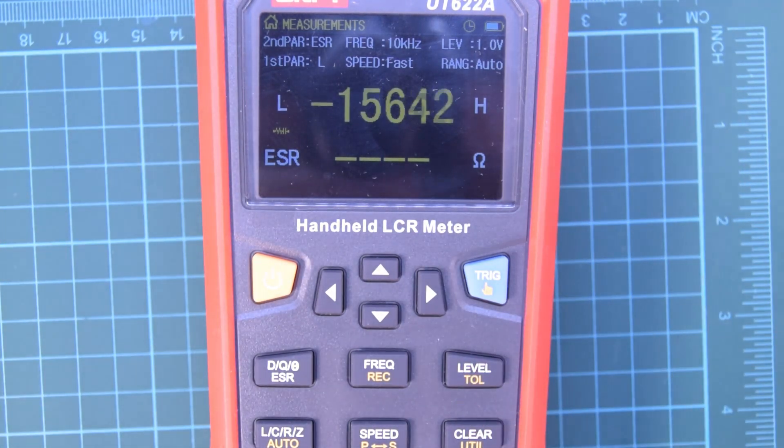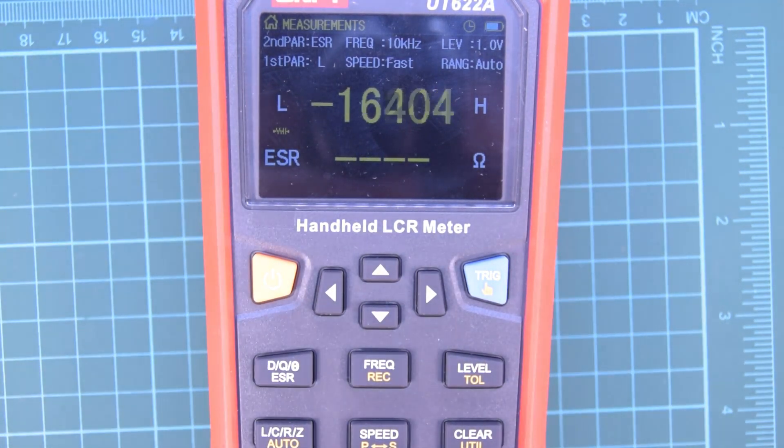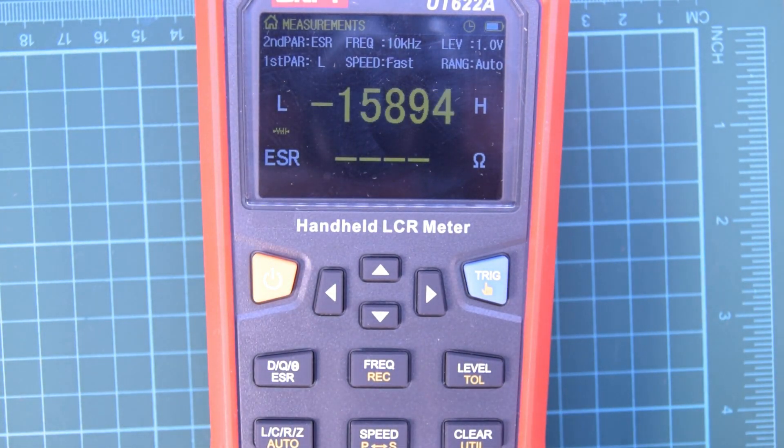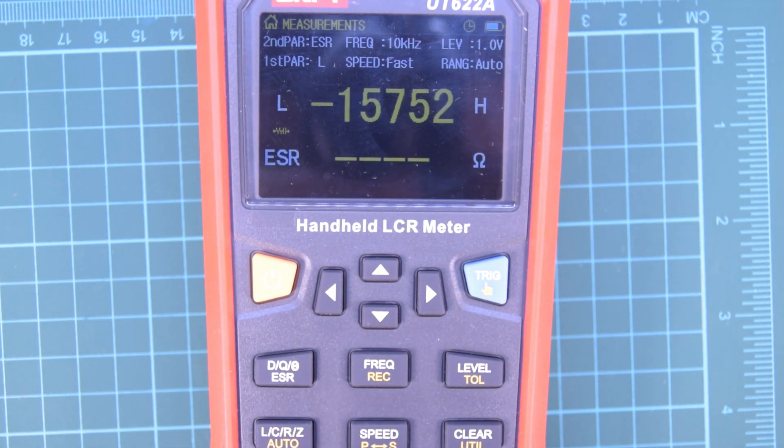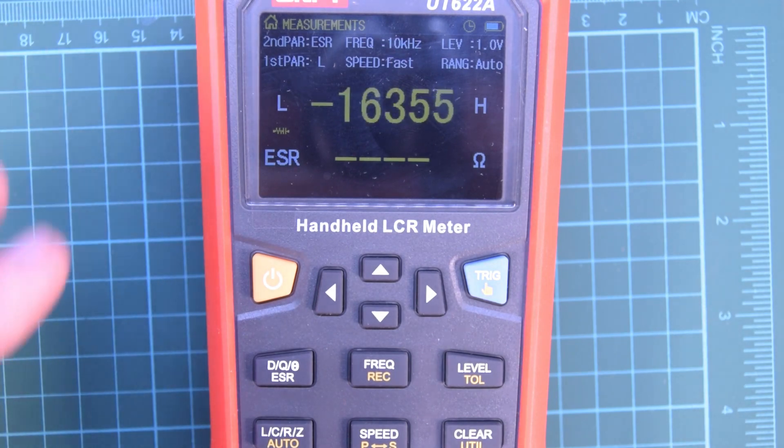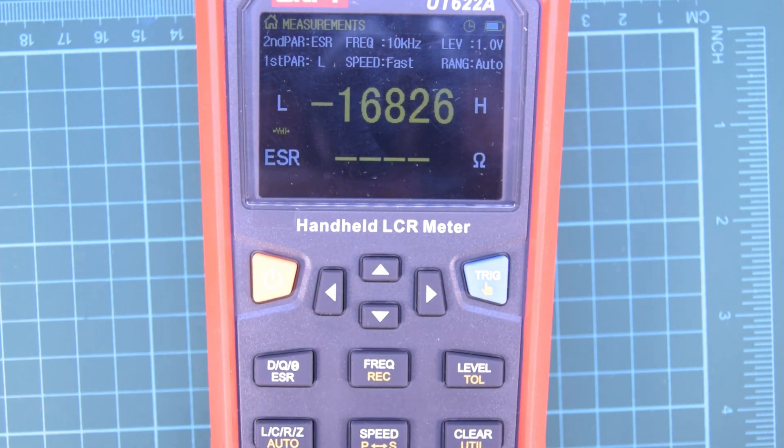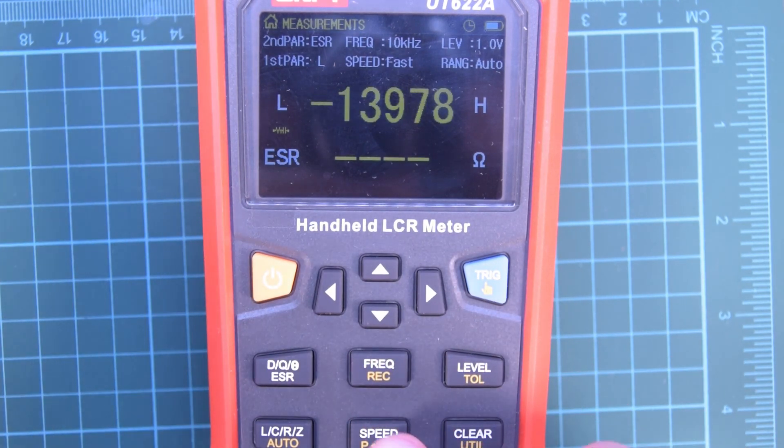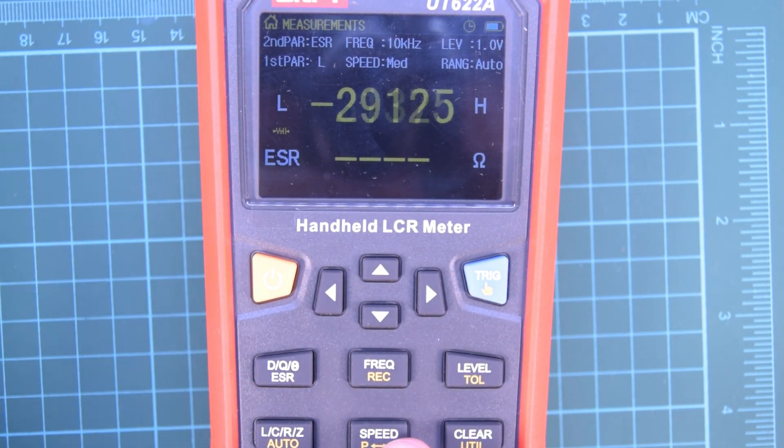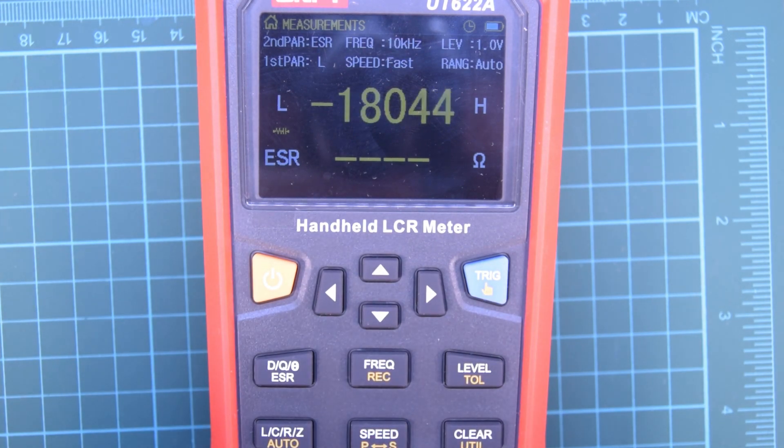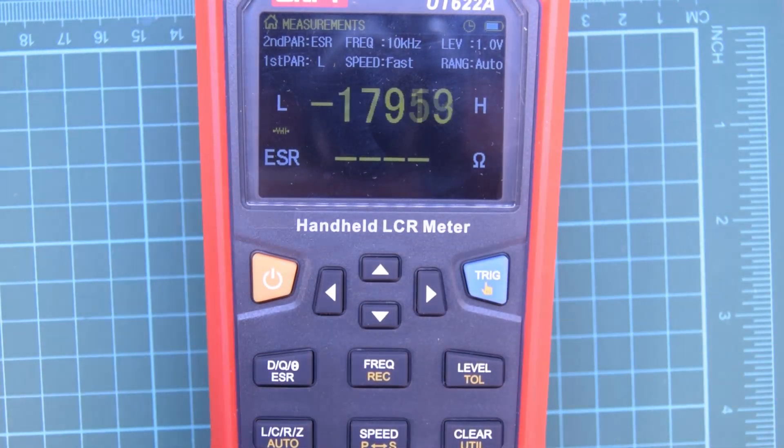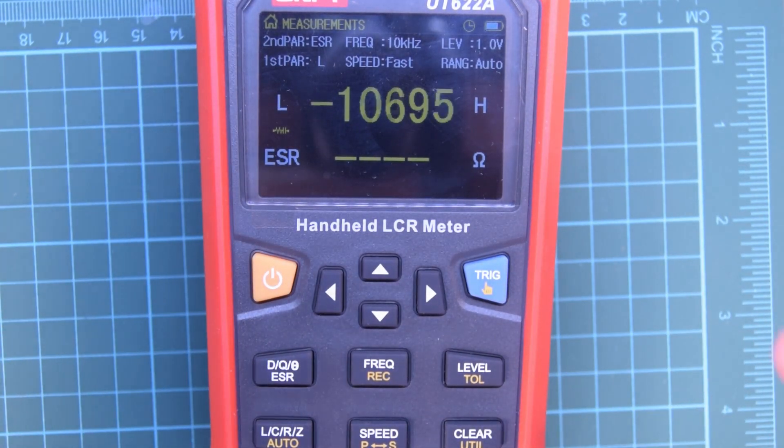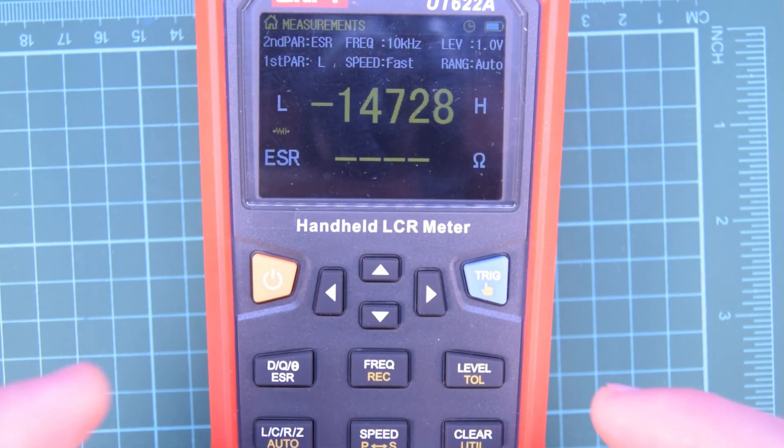Also this thing does tolerance testing, meaning that you can actually set like a fail or a pass figure. This thing does auto recognition, which is down here. You can change the speed of the testing for how many times per second. Fast is 20 tests per second, medium is five tests per second, and slow is two tests per second. So I mean this thing is absolutely beyond what I would need. But that's kind of good, because for a hobbyist or a beginner it's expensive, but for the amount of stuff it can do, the price is right.